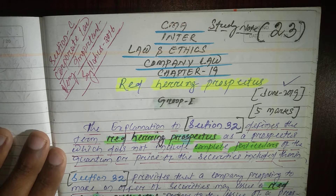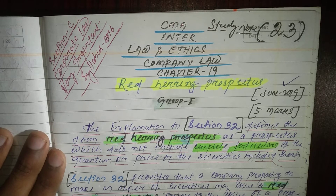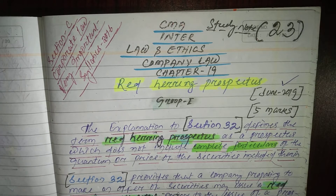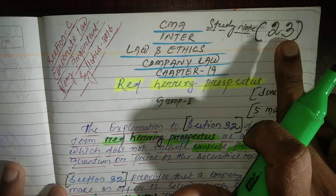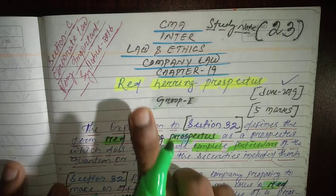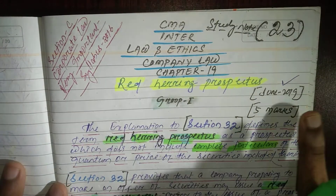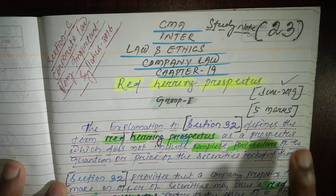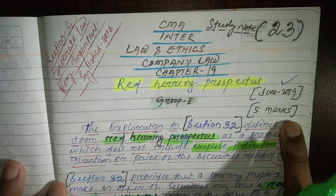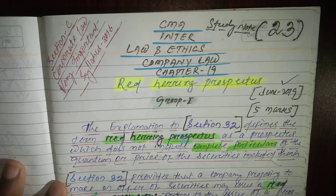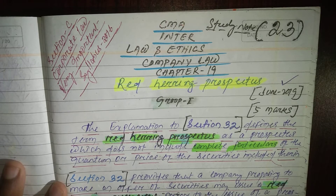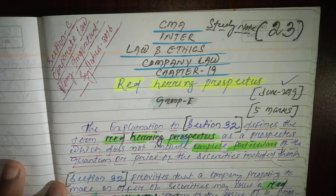Hello friends, in this video I am going to share one of the important topics of law and ethics — that is Red Herring Prospectus. This is lecture number 23 and this topic already came in the June 2019 examination, which carries 5 marks. It is very important and very simple.